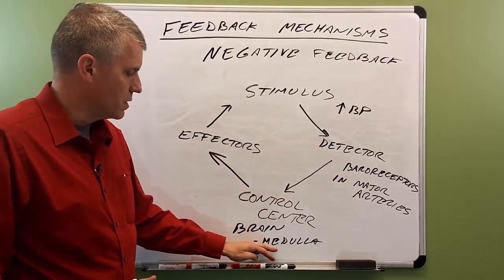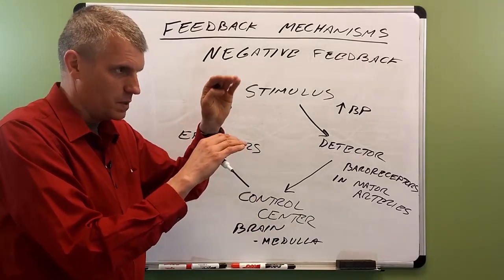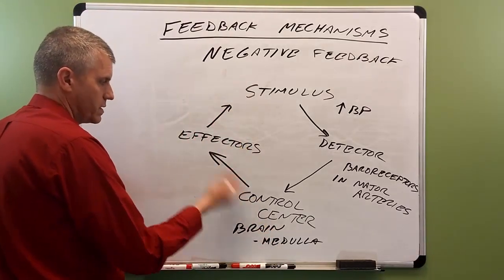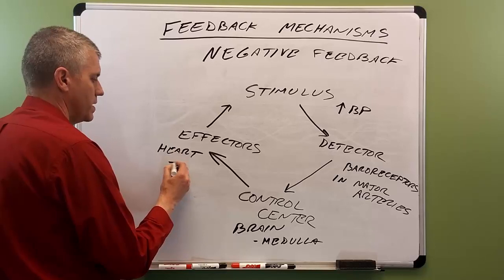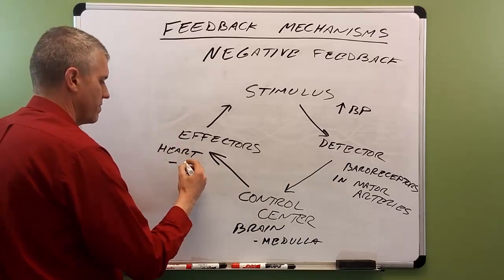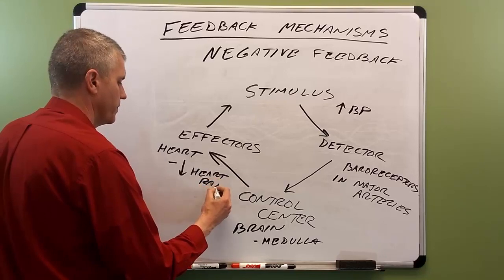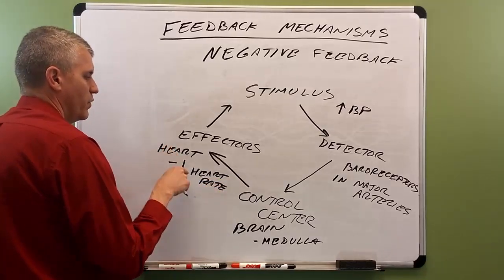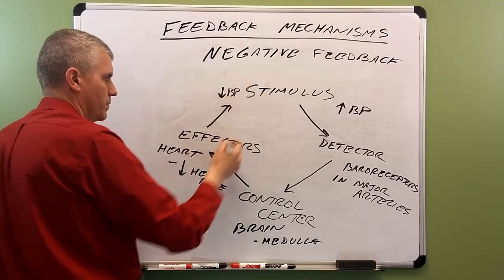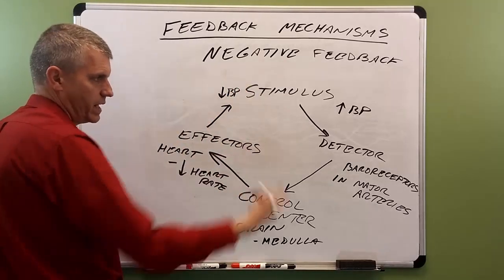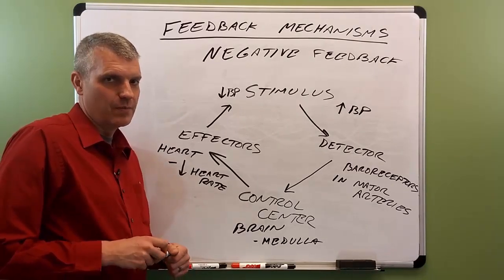The baroreceptors report that to the control center, and the control center says blood pressure is going up — we don't want it to go too high, so let's bring it back down. In this case, the control center for blood pressure is the brain, and more specifically the medulla oblongata. So blood pressure goes up, that's detected by the baroreceptors in the major arteries, those detectors send that information to the brain. The medulla says we're above the set point — it's gone too high, let's bring it back down. So the medulla then signals to the effector, in this case the heart, to decrease heart rate. If we decrease heart rate, that is going to lower blood pressure. So blood pressure comes back down. That's a negative feedback loop for one specific factor of the body's internal environment.